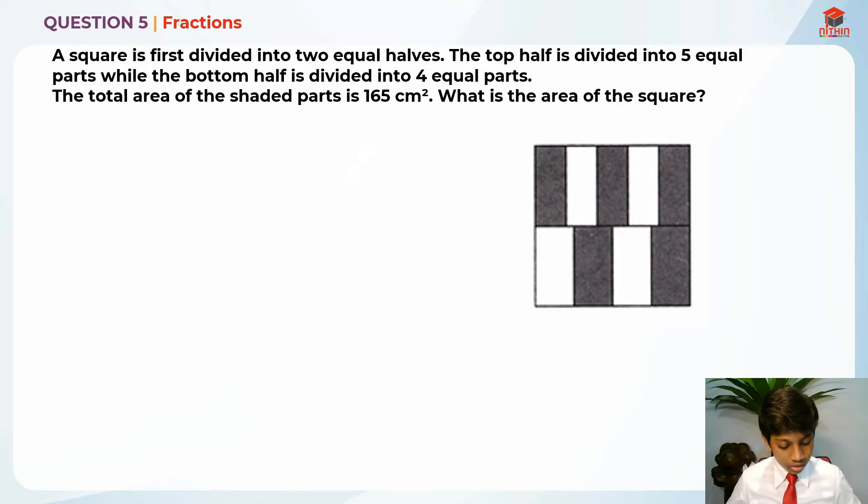Let's highlight the key information. First divided into 2 equal halves. Top half is divided into 5 equal parts, and bottom half is divided into 4 equal parts. Total area of shaded parts is 165 cm². What is the area of the square?